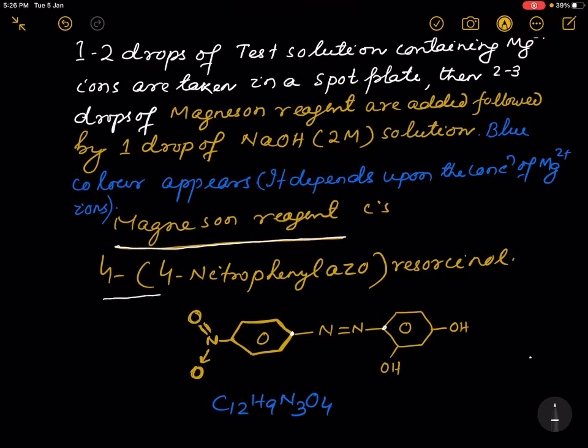Magnesium reagent is 4-(4-nitrophenylazo)resorcinol. You see, this part is resorcinol, this part is the azo group, and this part is phenyl.